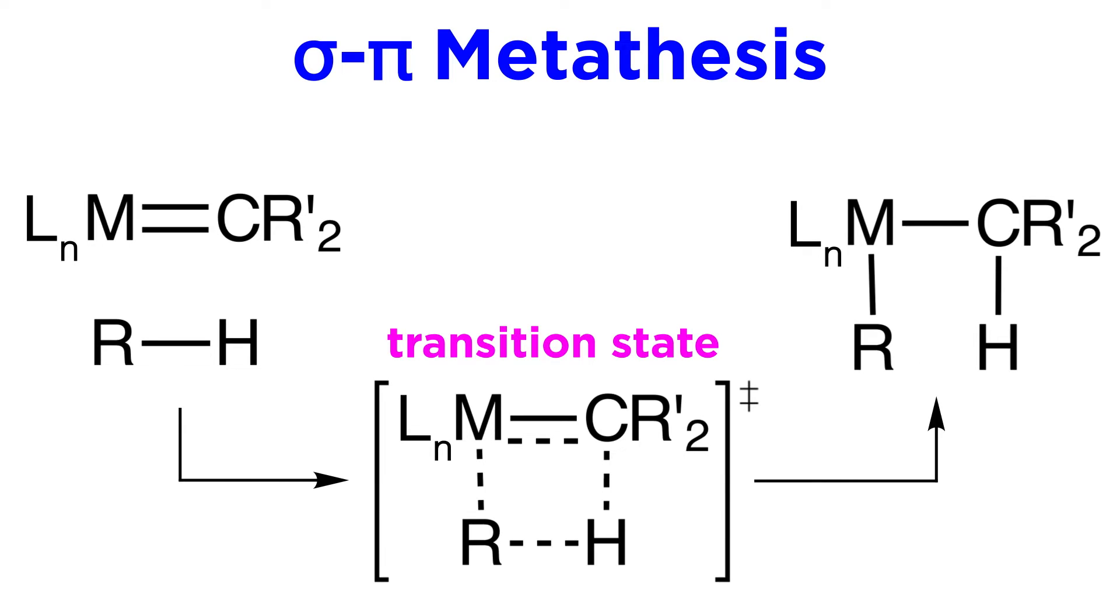Again, in the transition state, we can see partial bond character in this square configuration, with only the metal carbon sigma bond remaining intact. With this type of metathesis, again the metal must be D0 for the same reason as before, and we should also note that the final product is one molecular entity, rather than two separate entities like with sigma-sigma metathesis.